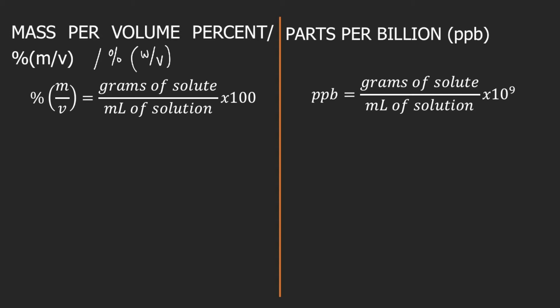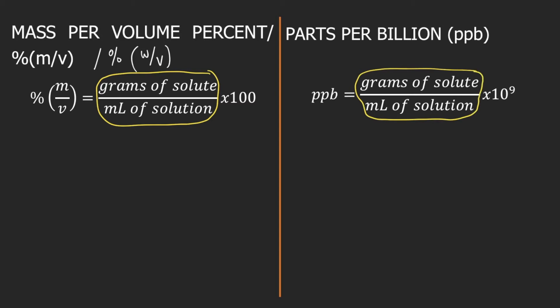Mass per volume percent is equal to grams of solute divided by mL of solution times 100. On the other hand, PPB or parts per billion is grams of solute divided by mL of solution times 10 to the 9. The two formulas are quite similar — both have grams of solute per mL of solution. The only difference is that mass per volume percent is multiplied by 100, while parts per billion is multiplied by 10 to the 9, or 1 billion.